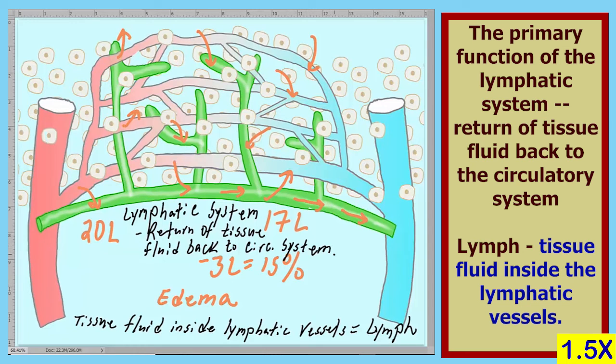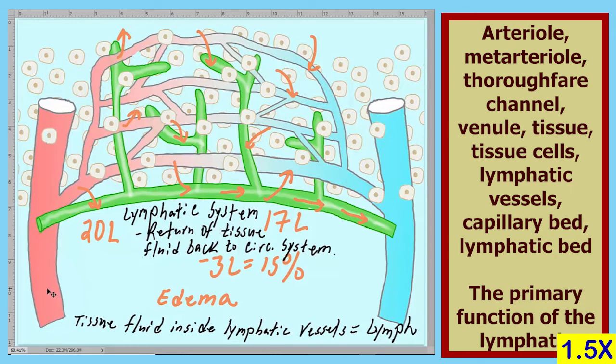Let's label a few components here. We have an arteriole, a metarteriole, a thoroughfare channel, a venule, tissue cells, lymphatic vessels, the capillary bed, and the lymphatic bed.